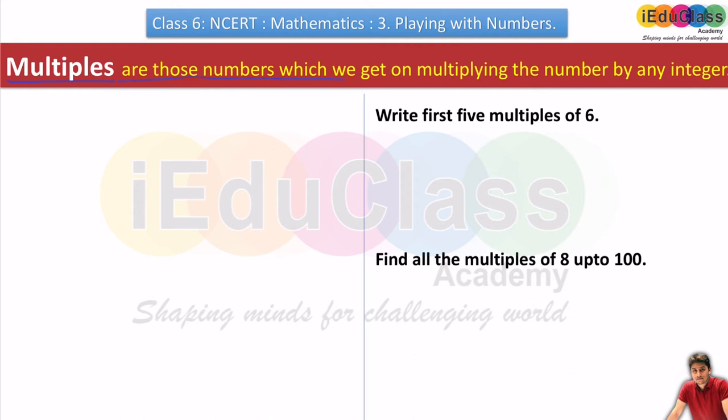Multiples are those numbers which we get on multiplying the number by any integer. If I take number 5, and the teacher asked to give multiples of 5, how will I give? Definitely I will multiply 5 with any integer. For example, 5×2=10, then I will multiply 5×5=25. I can take any integer. It is not fixed that continuously 1, 2, 3. If I multiply 5×100, it will be 500. If I multiply 5×20, it will be 100.